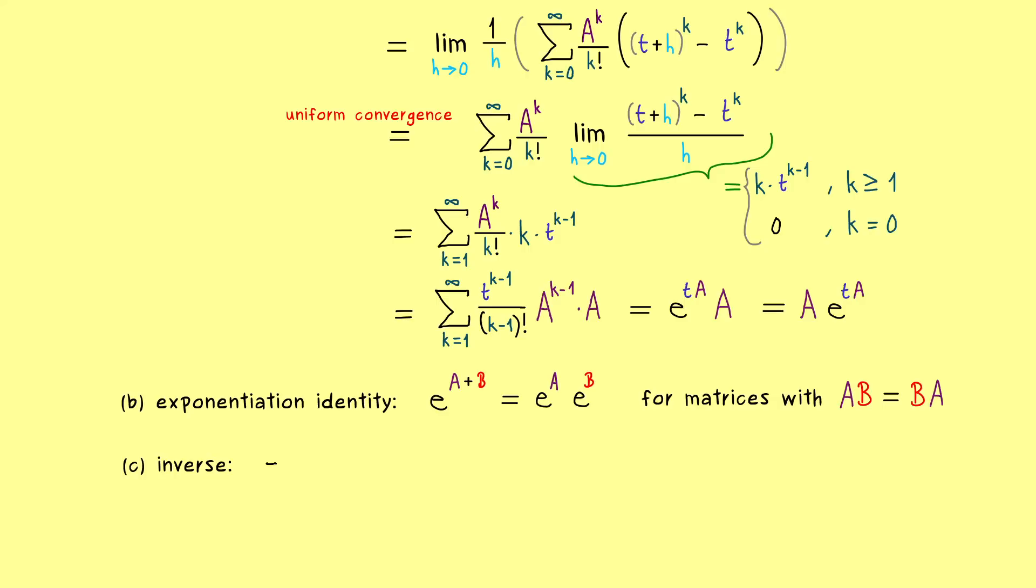Namely we can just multiply this by e to the power minus A. And since these two matrices are commuting, we can put them as a sum in the exponent. And then it's clear that we just get the zero matrix as a matrix exponential.